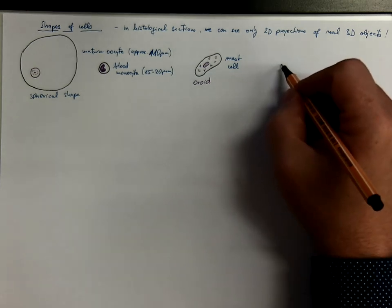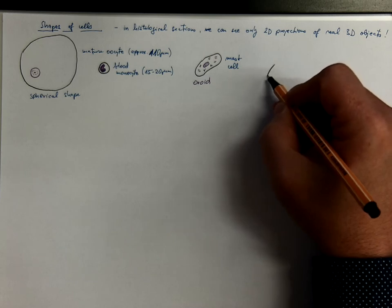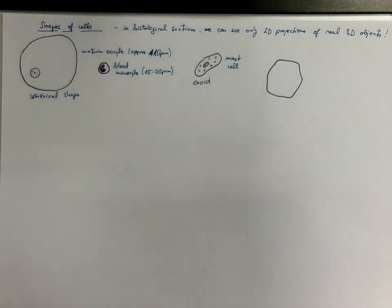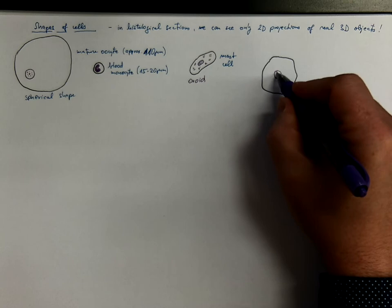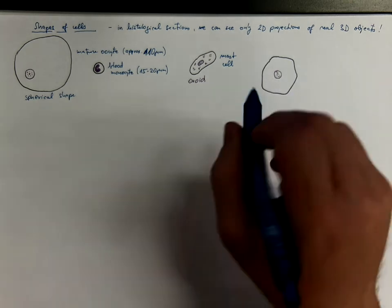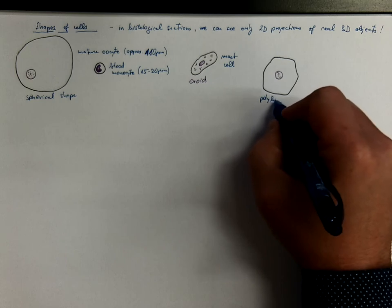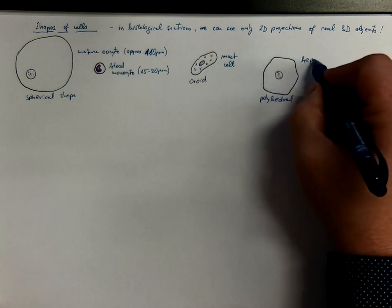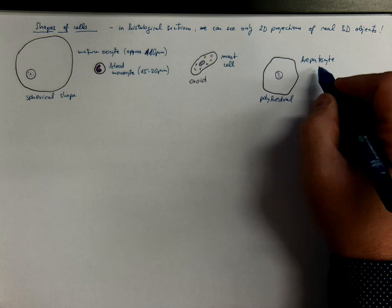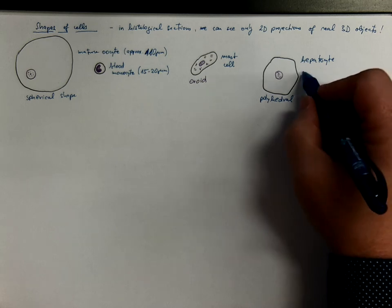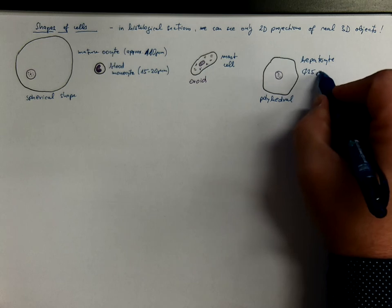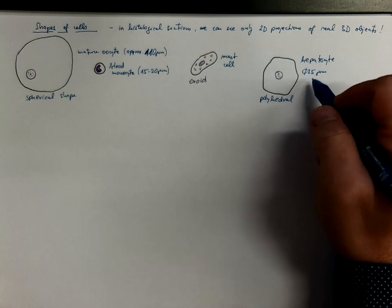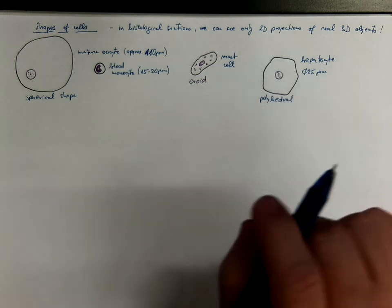Another common shape would be polyhedral. That's how a hepatocyte looks like. Hepatocytes are epithelial cells of liver with a diameter of roughly 25 micrometers, which makes it like an average cell of the human body. Because that's the mean diameter of the human cells.